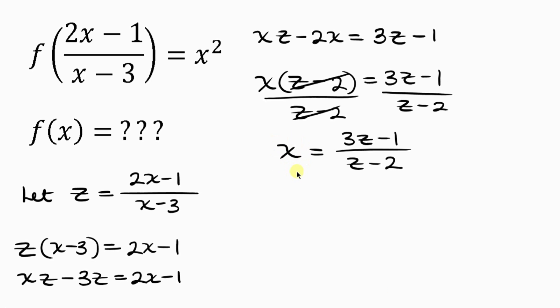Remember we want to isolate x, which we have done. Now let's go back to the question given to us. So we have f of, instead of writing this expression, remember we said let z be that expression, so I'm going to be writing z here, equals x. What do we have as our x? x is this expression, so I'm going to be replacing x with this expression. So this becomes (3z-1)/(z-2). And remember x is raised to a power of 2, that means I'm going to be raising this expression to a power of 2.